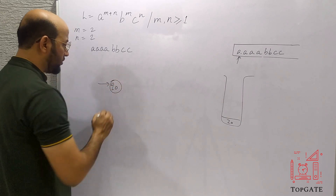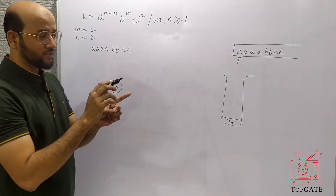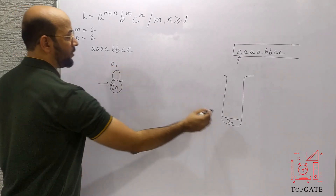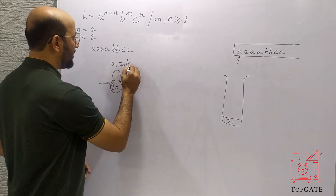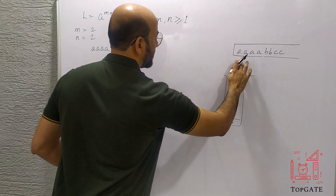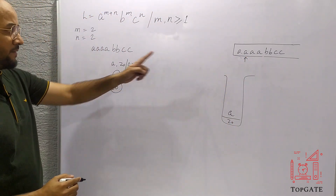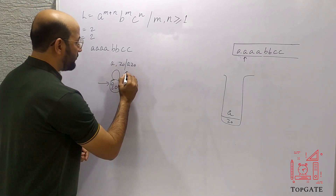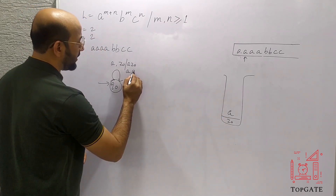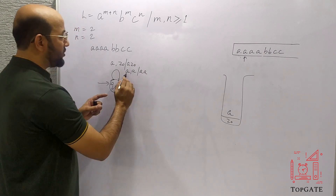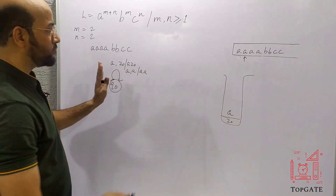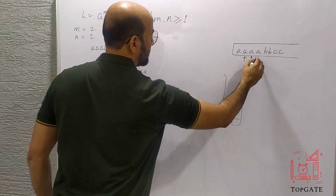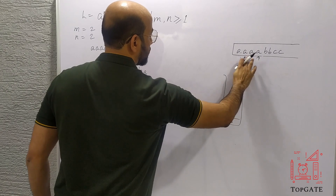We start at initial state q0. For the first a, the element to process is a and the top stack element is z-naught — we push it, writing a z-naught onto the stack. For the second a, the top stack element is now a, so we take a self-loop transition: element is a, top is a, push to get a a. This self-loop handles all subsequent a's — all a's will be pushed onto the stack using this transition.